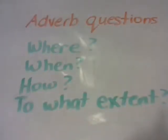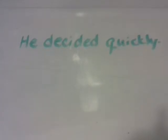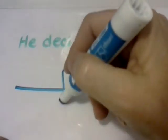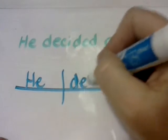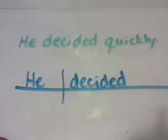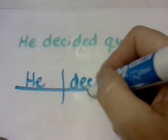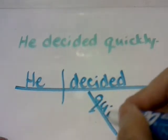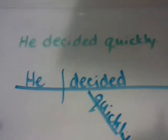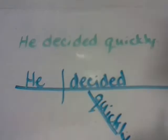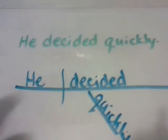Let's try a couple of sentences. First: 'He decided quickly.' How did he decide? He decided quickly. The subject of this sentence is 'he,' the verb is 'decided,' and 'quickly' is the adverb modifying the verb — it's telling how he decided.